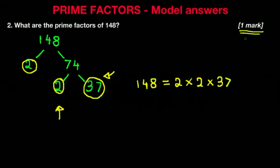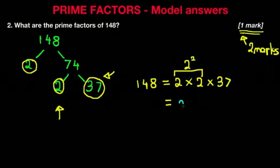Now it is possible that you may be given 2 marks for this. If you're given 2 marks, they may be asking you to simplify this. So the 2 times 2 becomes 2 to the power of 2. Therefore the answer becomes 2 to the power of 2, or 2 squared, times 37. And that is our answer. The prime factors of 148 are 2 squared times 37.